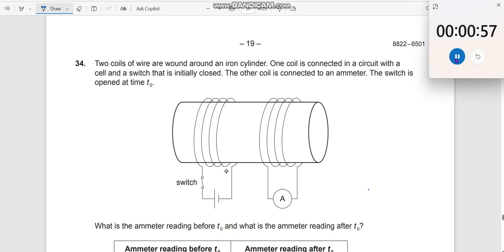Question number 34. Two coils of wire are wound around an iron cylinder. This is one coil, this is the other coil.